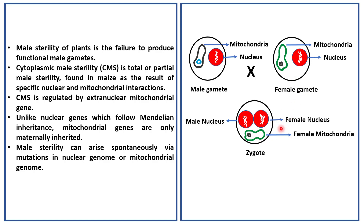Male sterility can arise spontaneously via mutations in the nuclear genome or mitochondrial genome. You may wonder why nuclear genes are mentioned here as well — the answer will be clear shortly.